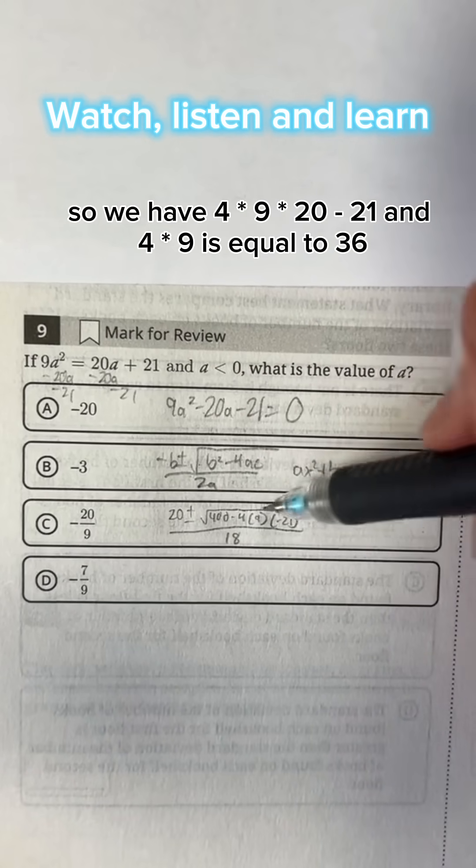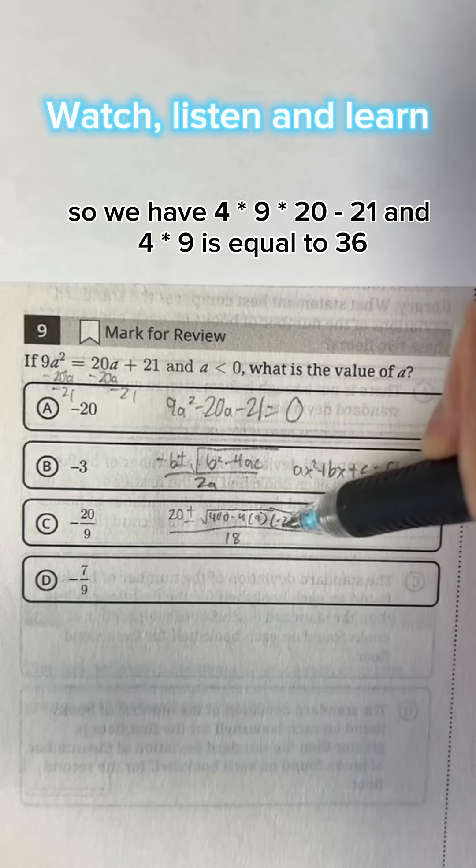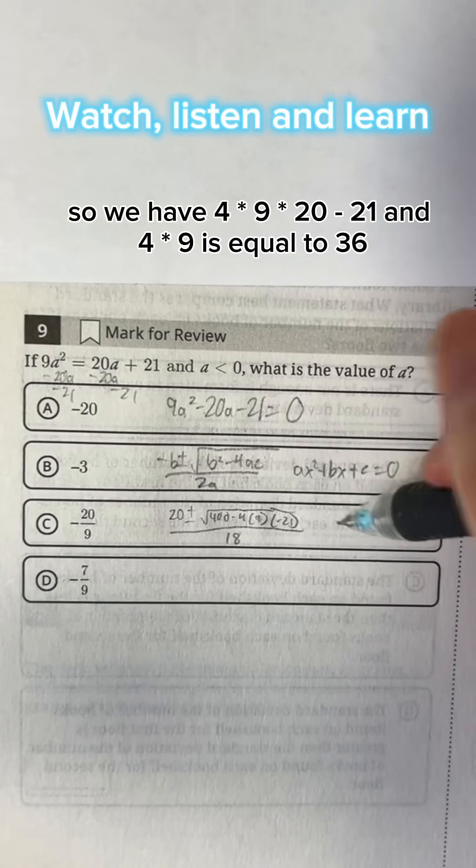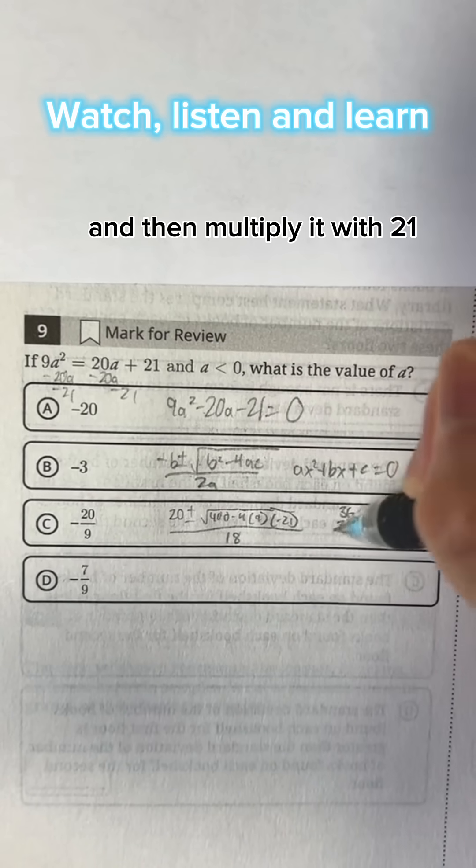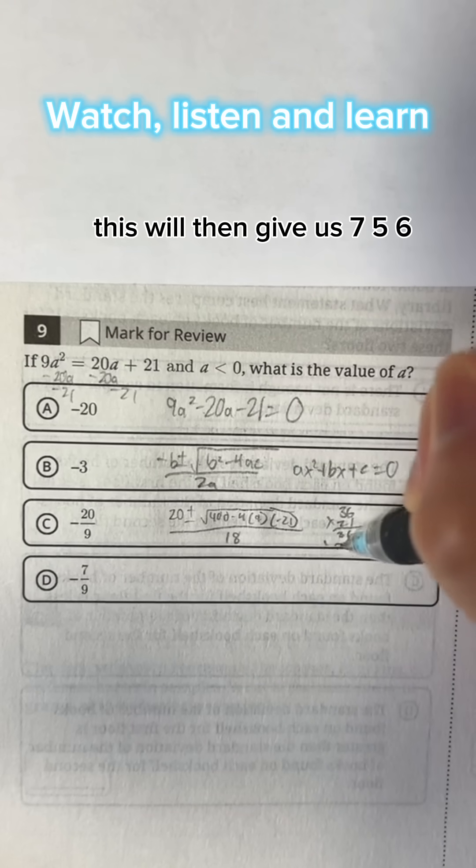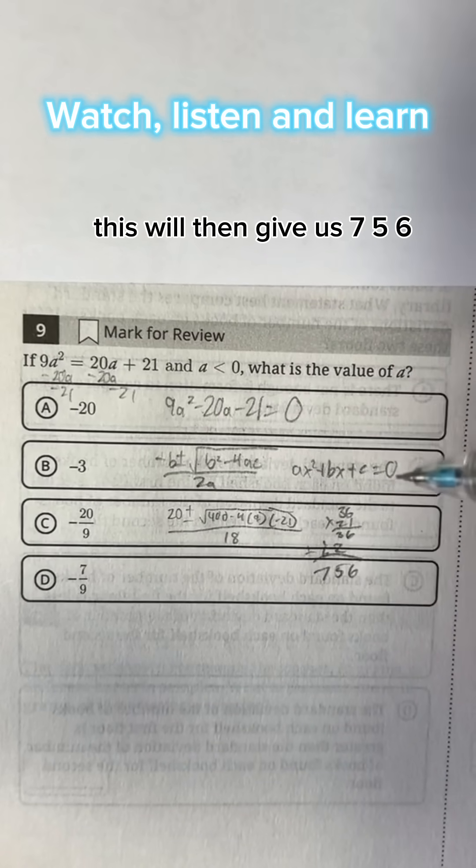And now let's simplify things. So we have 4 times 9 times negative 21 and 4 times 9 is equal to 36 and then multiply it with 21. This will then give us 756.